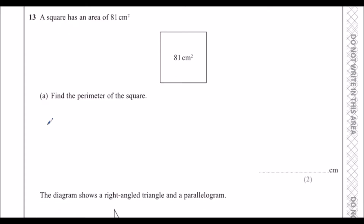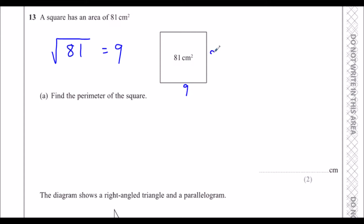Question 13: A square has an area of 81 cm squared. To find the perimeter we need the side length — the square root of 81 is 9 cm. The perimeter is 4 times 9, which is 36 cm.